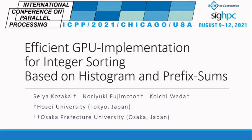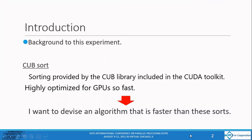Kozakai of Forster University will make a presentation on efficient GPU implementation for integer sorting based on histogram and prefix sums. When implementing GPGPU, there is cub-sort as a sorting algorithm provided by CUDA's cub library in the integrated development environment provided by NVIDIA.